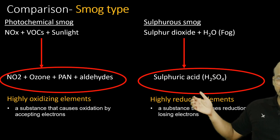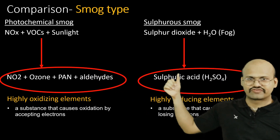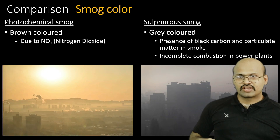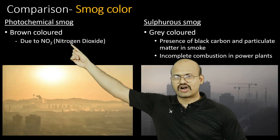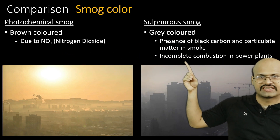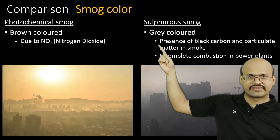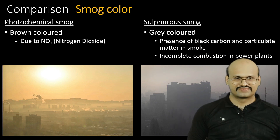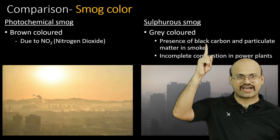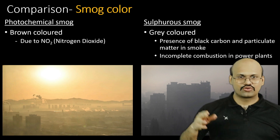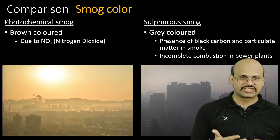So photochemical smog is oxidizing in nature and sulfurous smog is reducing. The color of photochemical smog is brown due to the presence of nitrogen dioxide. The color of sulfurous smog is gray due to the presence of black carbon and particulate matter in the smoke, which is generated due to incomplete combustion of coal in the power plants.